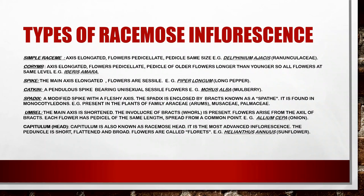The third type is the spike, where the main axis is elongated and flowers are sessile — sessile means without stalks, attached directly to the stem. Example: Piper longum, the long pepper. The fourth type is the catkin, which is a pendulous spike bearing unisexual sessile flowers. Example: Morus alba, the mulberry. Catkin is a pendulous spike where flowers are sessile and unisexual.